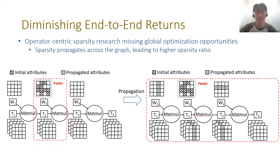The second obstacle is diminishing end-to-end returns. Previous research works mainly focused on optimizing the performance of a single operator, losing optimization opportunities at the graph level. We find that the effect of sparsity is not limited to the current operator, and values in nearby tensors may also become sparse, affected by other sparse tensors. We call this sparsity propagation.